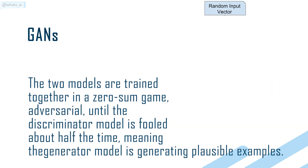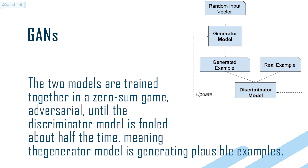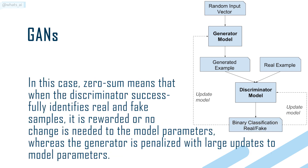The two models are trained together in a zero-sum game — adversarial — until the discriminator model is fooled about half the time, meaning the generator model is generating plausible examples.